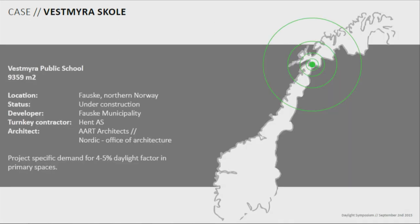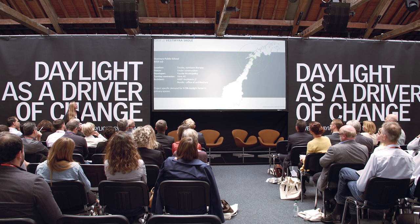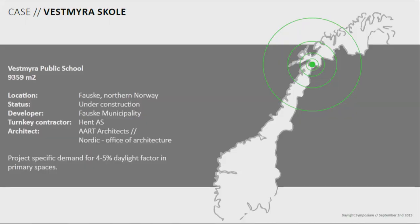I'm going to talk about Vestmyra skole in Fauske, in the far north of Norway — near the border. It's a project we worked on together with the Nordic Office of Architecture, based in Oslo. The client had a very early focus on daylight due to the geographic location in the far north. They set up a demand for four to five percent average daylight factor in primary educational spaces — more ambitious than the two percent requirement — and that was our point of departure for working with daylighting in this school.